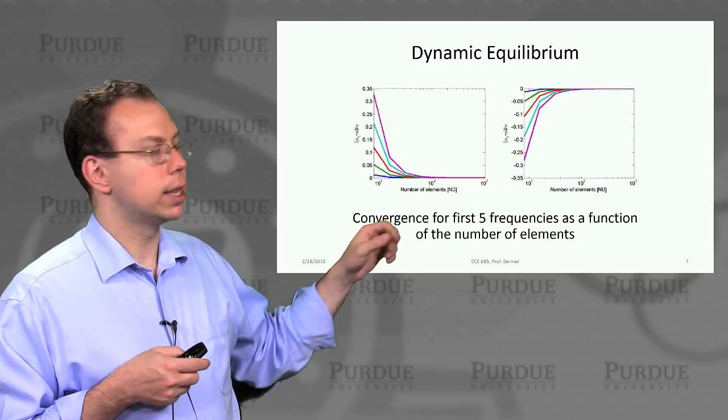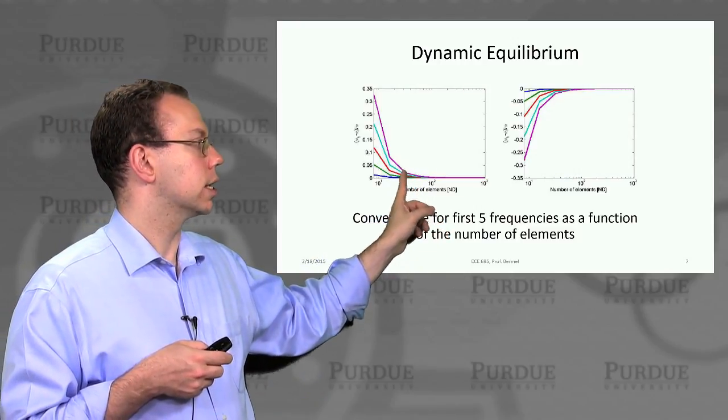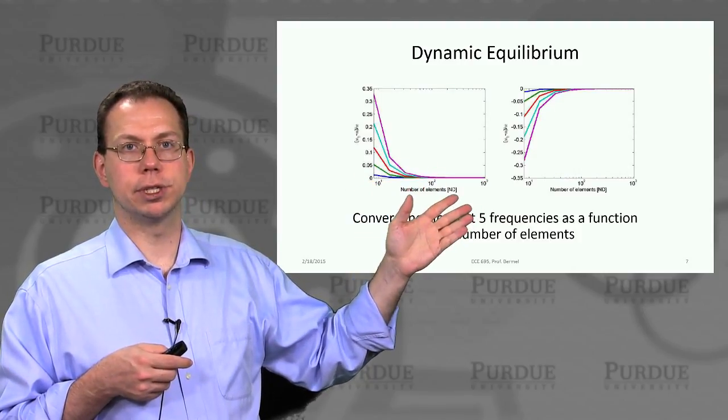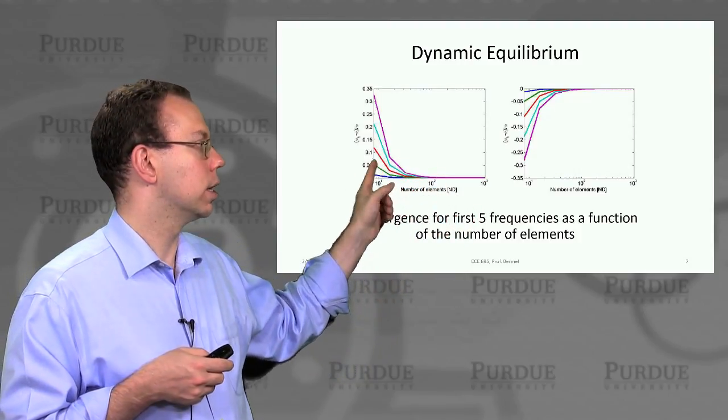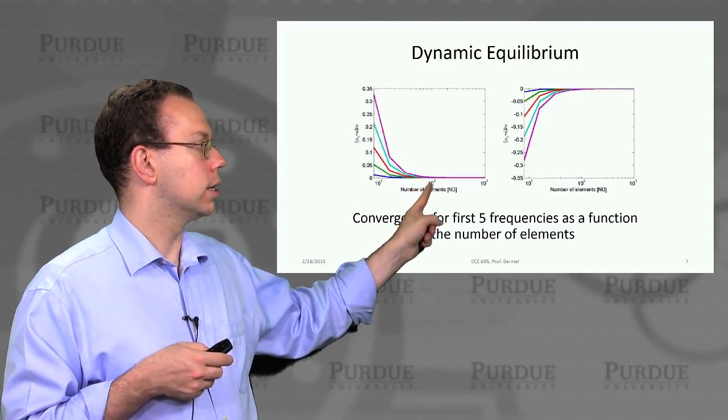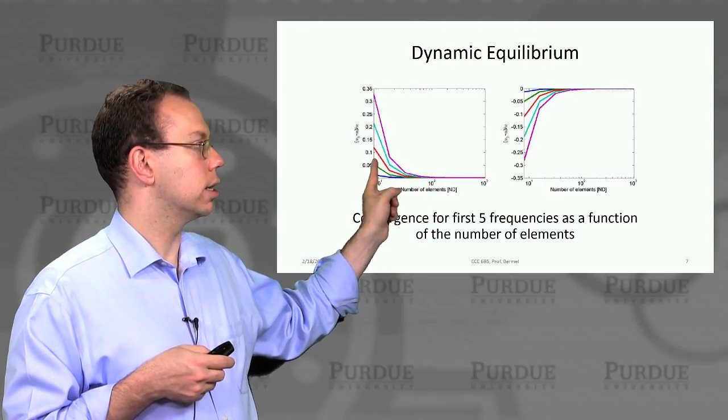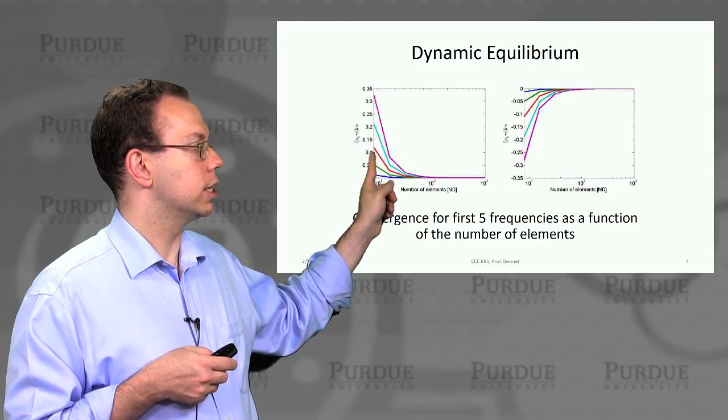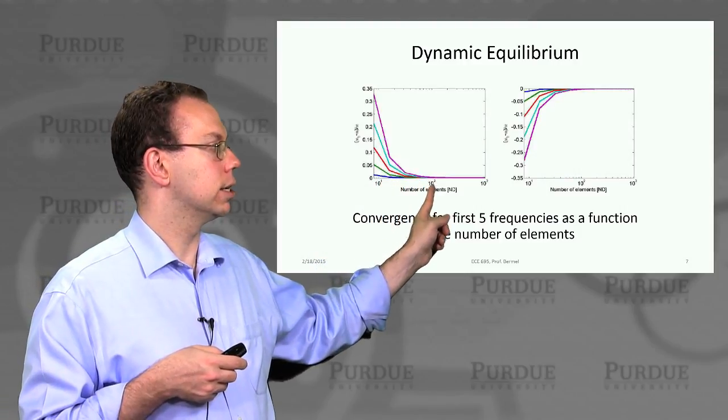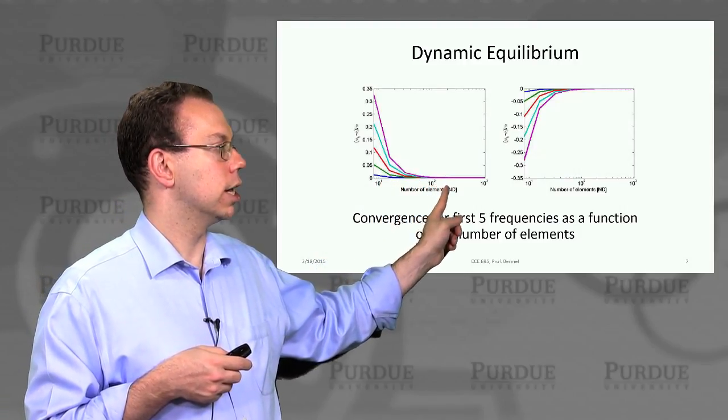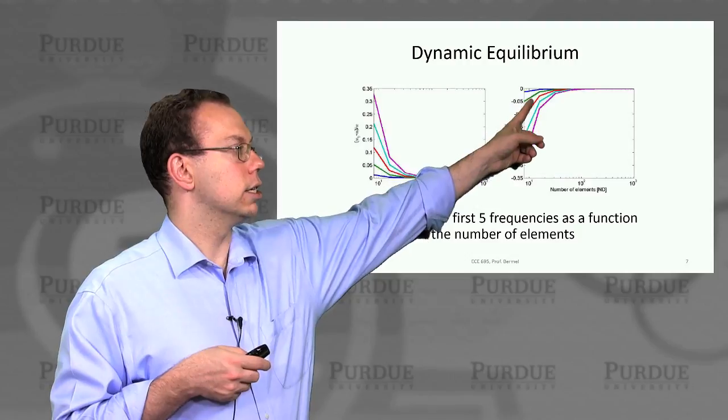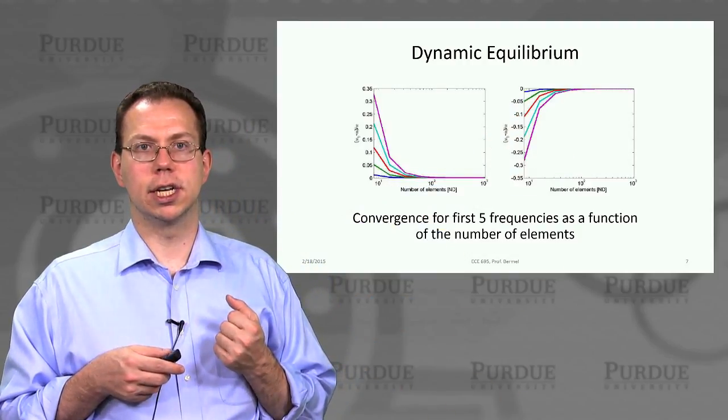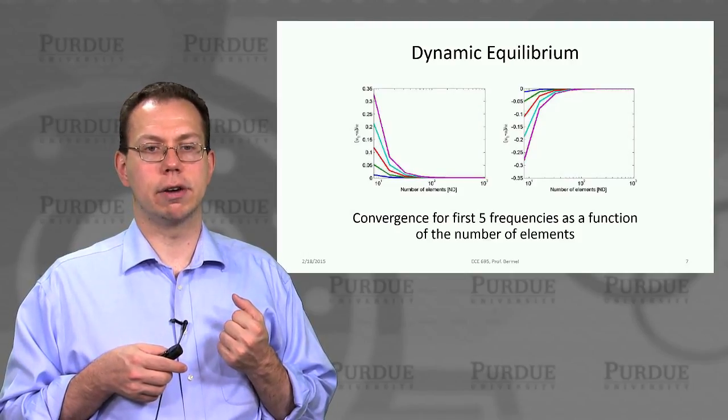You can see that the error of this approach, which is more general than what we had done before and subsumes the previous calculation, actually reduces very rapidly with the number of elements. Before, the graph I showed you, which did have a significant error, was at a very small number of elements, but as we increase the number to maybe 50 or 100, the errors become very small. This shows the approach systematically converges for all frequencies of interest to accurate values.